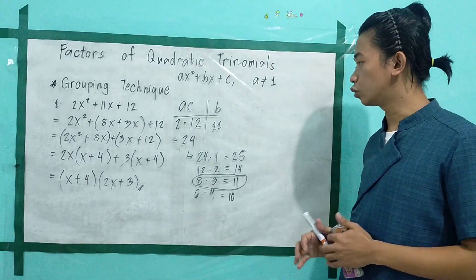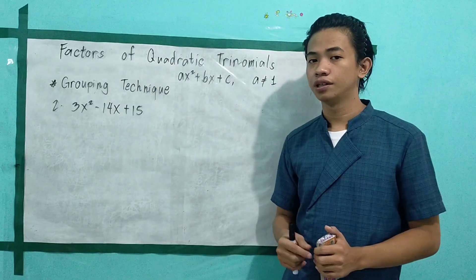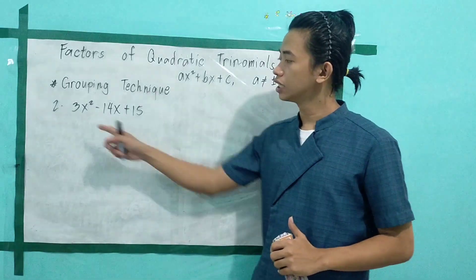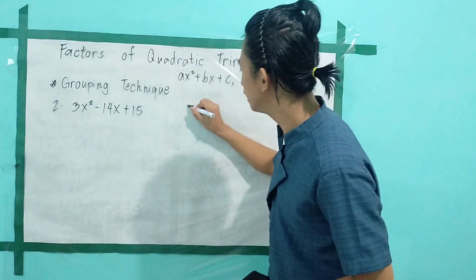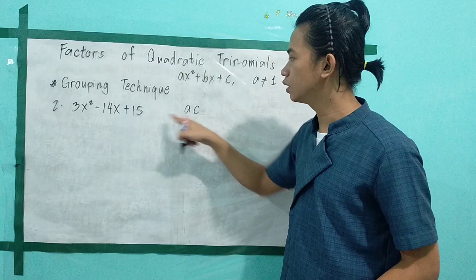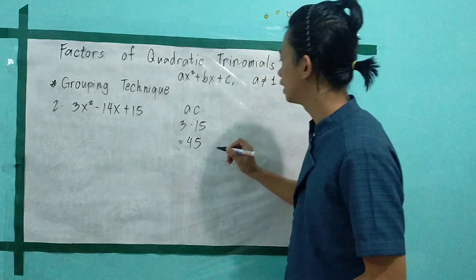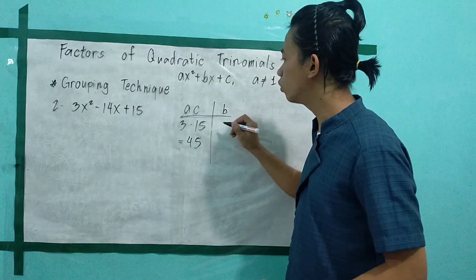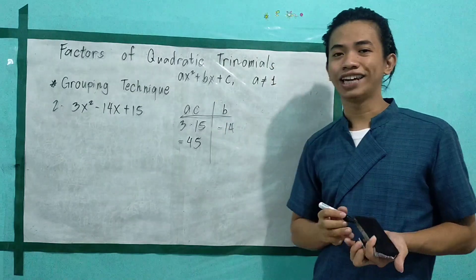Now let's proceed to problem number 2. In problem number 2, we have 3x squared minus 14x plus 15. First, take the numerical coefficient of x squared and multiply it by c: a times c equals 3 times 15, which is 45. Then, take the numerical coefficient of b, which is negative 14.